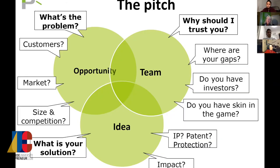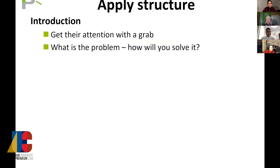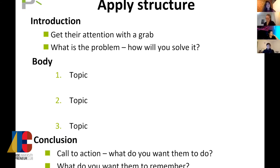You need to start networking now. You need to build your network before you need it. Clarity is king. You want to have a grab at the start. You want to talk about the problem, how you'll solve it, chunk everything into three main topics if you can, and then come down to a conclusion, a call to action. What do you want them to do? What do you want them to remember?